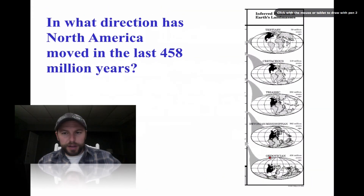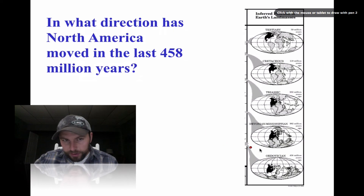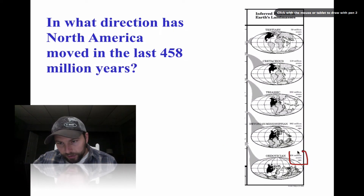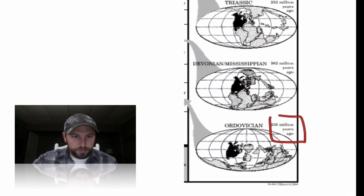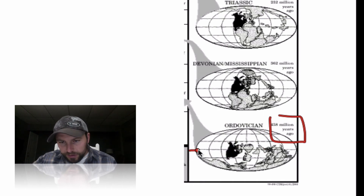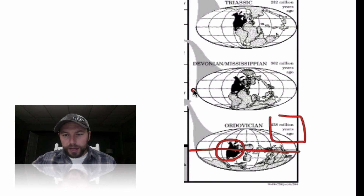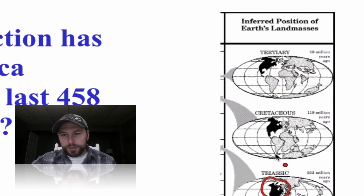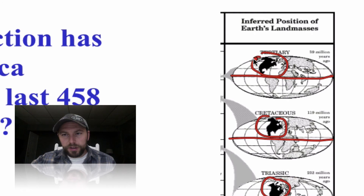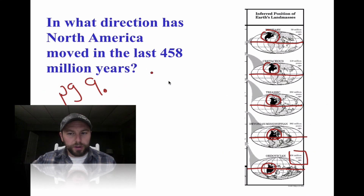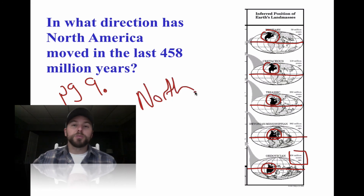If we take a look at North America going back 458 million years ago — this is page 9 of our reference table — we can see that this is our equator and that North America and Canada was over here. As time goes on you can see it keeps moving away from the equator into its pretty much present condition. So we can see it has moved north over time.